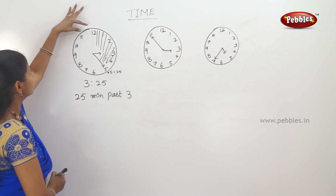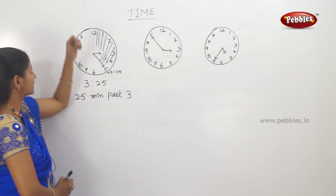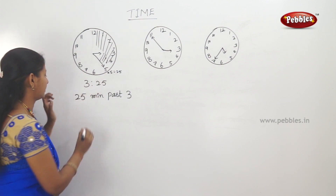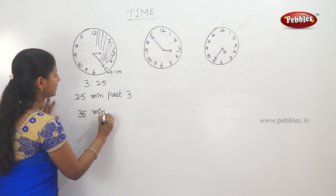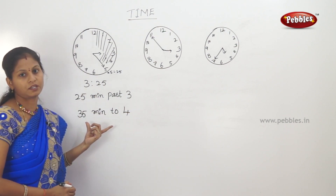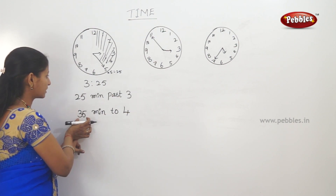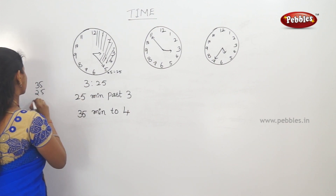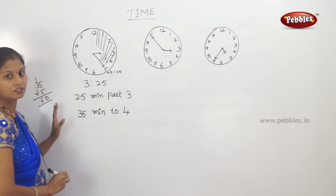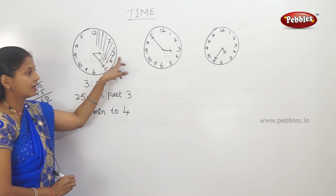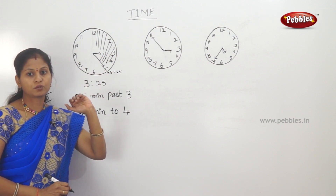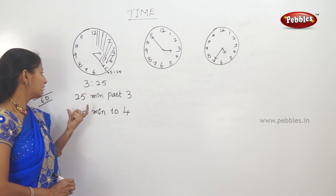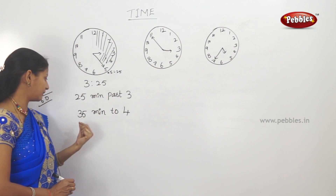We are talking about 55 divisions. 5, 10, 15, 20, 25, 30, 35 — that means 35 minutes to the next number, which is 4. If we add these minutes, we have 60 minutes total. 35 minutes here, 25 minutes there — 60 minutes. That means correct. 25 minutes past 3 means 35 minutes to 4.